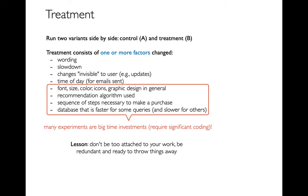Another thing to think about as we look at all these different factors is that some of them actually take a lot of time. You actually have to write new code — if I want a recommendation algorithm, somebody has to write that; if I want a fast database, I have to deploy a new one. To do all these experiments, we have to make multiple versions of the same thing with the knowledge that we're going to throw something away. The lesson here is: don't become too attached to your work.